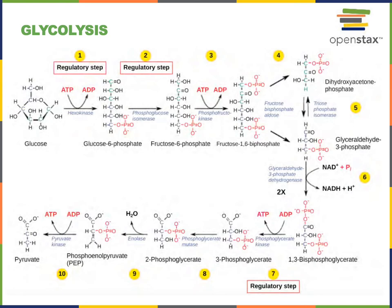The first step of glycolysis, catalyzed by hexokinase, is the phosphorylation of glucose to form glucose-6-phosphate. The phosphate group transferred onto glucose comes from ATP, so one ATP is consumed by hexokinase to produce glucose-6-phosphate, and ADP is another product of this reaction. The second step is an isomerization reaction that converts glucose-6-phosphate to fructose-6-phosphate.